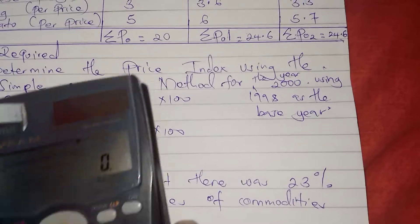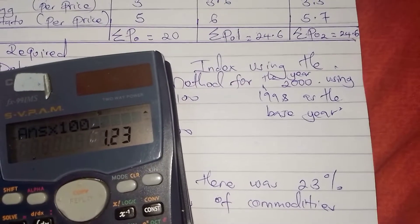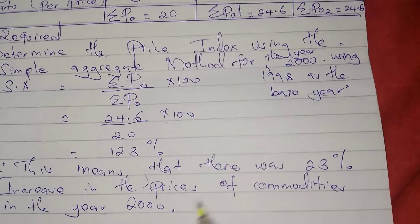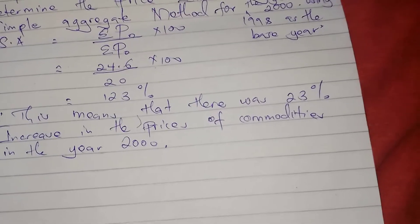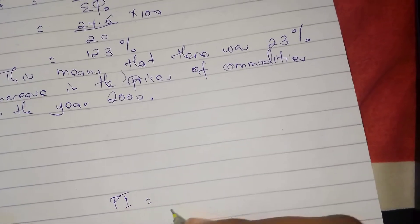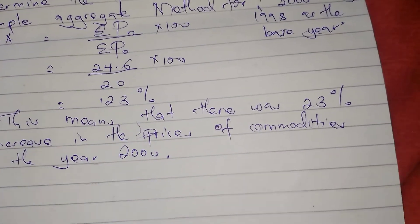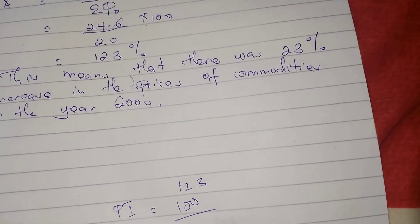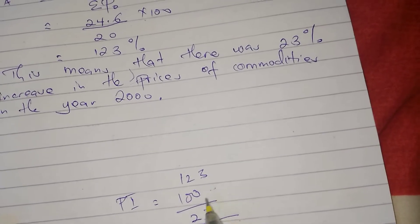So we calculate: 24.6 divided by 20, times 100, which gives us 123. So the price index for the year 2000 is 123 percent. Remember, the base year price index is always 100. For the current year we have 123, and the difference between 100 and 123, which is 23, is what we consider as either an increase or a decrease.